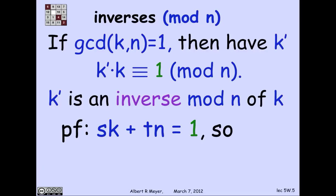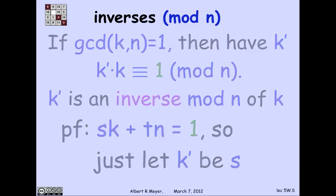So s times k plus t times n is 1. But if you stare at that for a moment, what that means is that k prime is simply the coefficient s of k. So all you have to do is apply the pulverizer to k and n to get the coefficient s of k in the linear combination of k and n that's equal to 1.